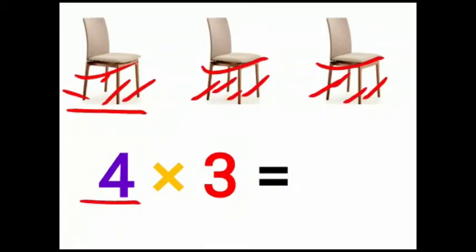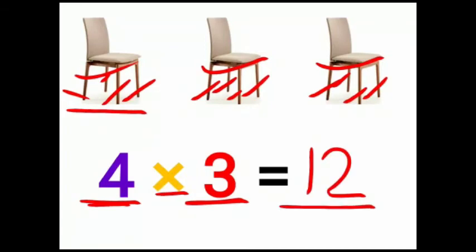Children, 4 legs. 4×3 is equal to 12. 4 threes are 12. 12 legs.